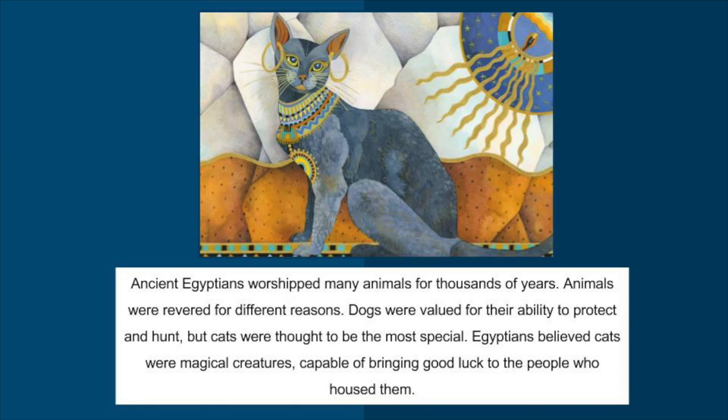Ancient Egyptians worshipped many animals for thousands of years. Animals were revered for different reasons. Dogs were valued for their ability to protect and hunt, but cats were thought to be the most special. Egyptians believed cats were magical creatures capable of bringing good luck to the people who housed them.